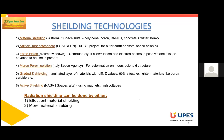Material shielding consists of highly hydrogenated materials like polyethylene, boron, BNNTs, hydrogenated boron nitride, and nanotubes. It also includes concrete and lead shields which are 0.25 mm thick for secondary radiation and 0.5 mm thick for primary radiation.